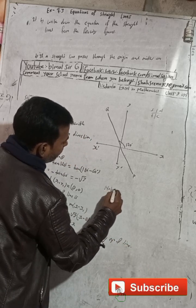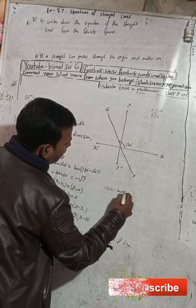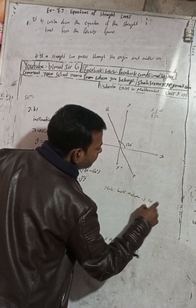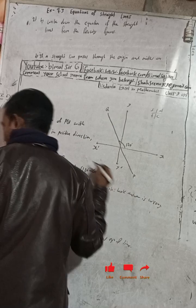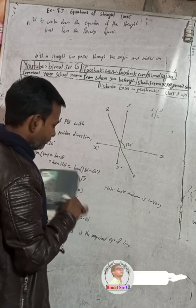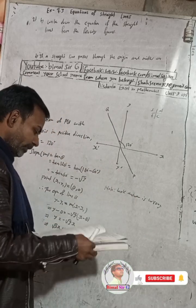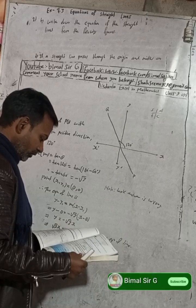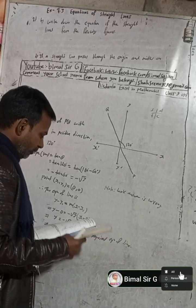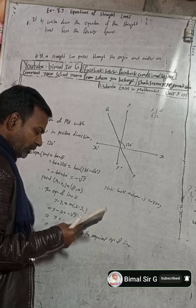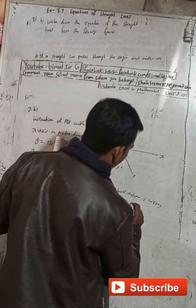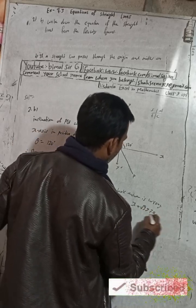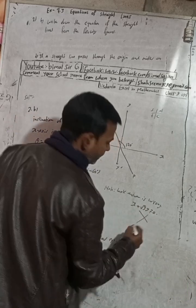Note: the book answer is wrong. The book answer given is X plus root 3Y = 0, which is incorrect.